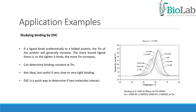The last application example is the study of binding by DSC. If a ligand binds preferentially to a folded protein, the Tm of the protein will generally increase. The more bound ligand there is, or the tighter it binds, the more Tm increases. DSC can determine binding constants at Tm. It is not ideal, but useful if binding is very slow or very tight.